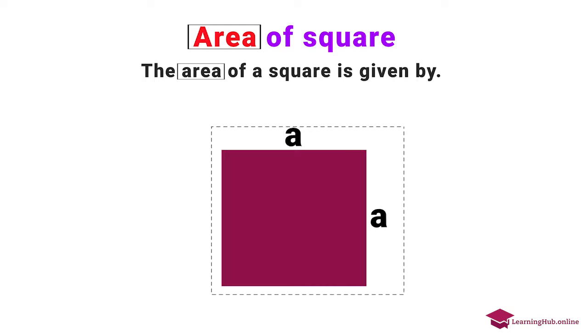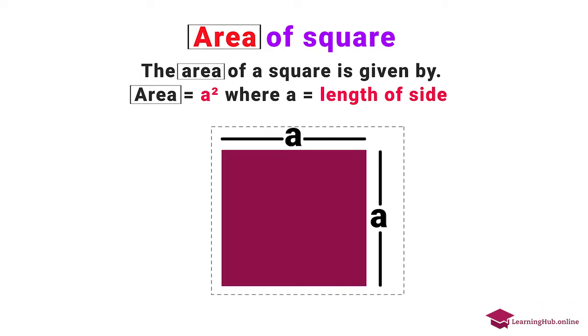Area of square. The area of a square is given by area equals a squared, where a equals length of side.